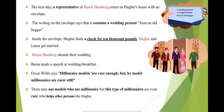The next morning, a representative of Baron Hausberg came to Hughie's house with an envelope. The writing on the envelope said it contained a wedding present from an old beggar. When Hughie had invested that coin as charity, he got a return beyond his expectations — unlike his failed investments in the stock market. Inside the envelope, Hughie found a cheque for £10,000. Because of the cheque and a job from Baron Hausberg, he could get married to Laura Merton. Baron Hausberg made a speech at the wedding breakfast, and all the people laughed, knowing the story.